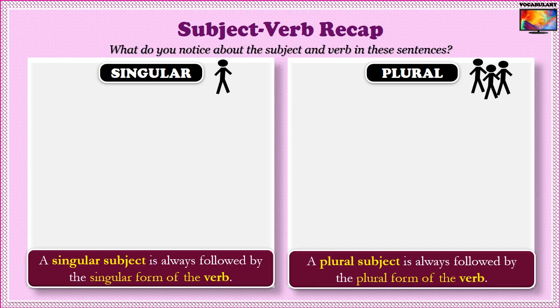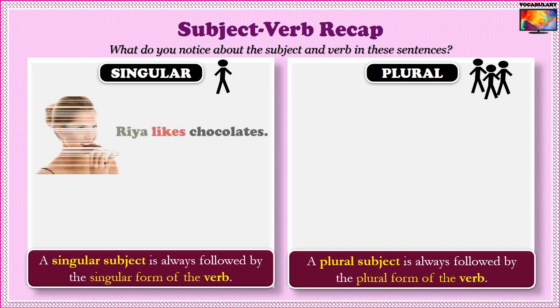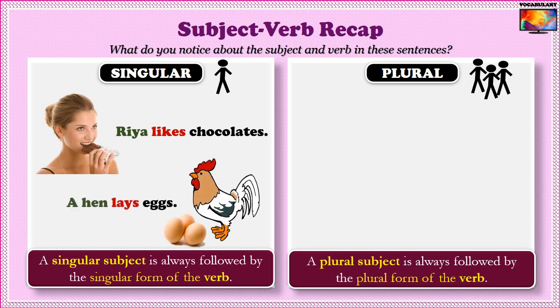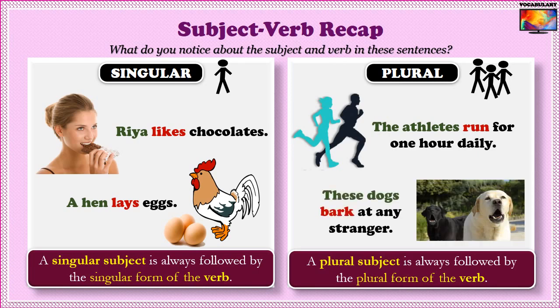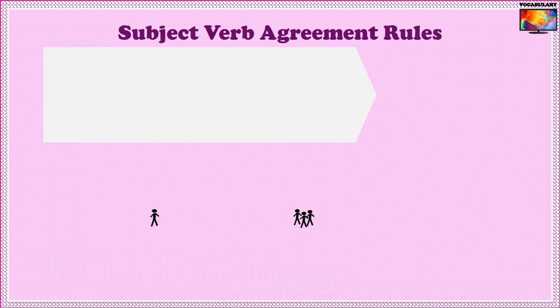As an example, notice the subjects and verbs in the following sentences: 'Rhea likes chocolates' and 'A hen lays eggs.' The subject nouns are singular, meaning they stand for a single person, animal or thing. You would have observed that the verbs 'likes' and 'lays' end in S. Now, some examples with plural subjects — 'The athletes run for one hour daily' and 'These dogs bark at any stranger.' The plural verbs 'run' and 'bark' do not end with S.